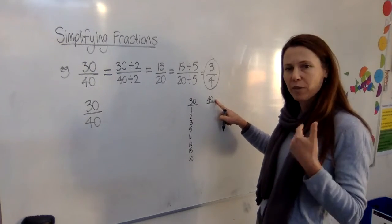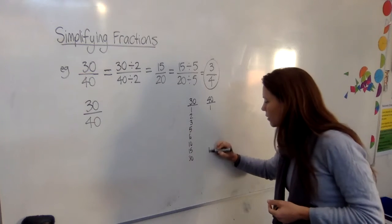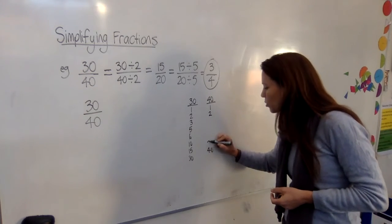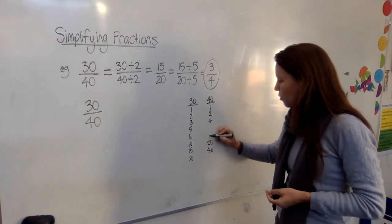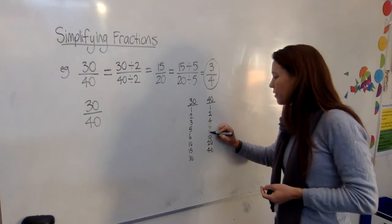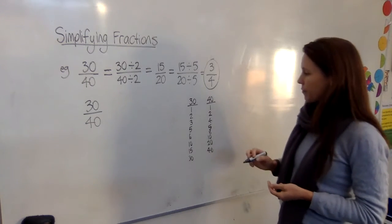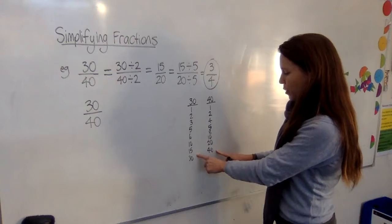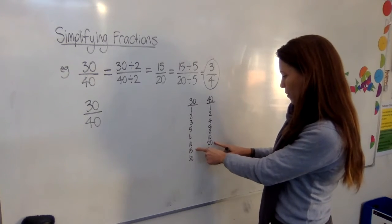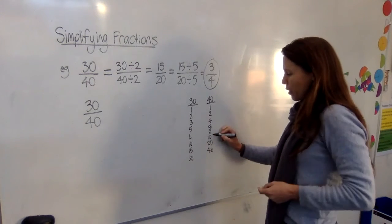The factors of 40. We've got one and 40. We've got two and 20. We've got four and 10. And we've got five and eight, because five eights are 40. Now, if you look at all the factors of both of them and work upwards from the bottom, the biggest factor that they both have is 10.